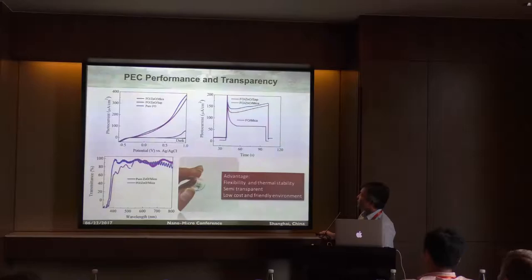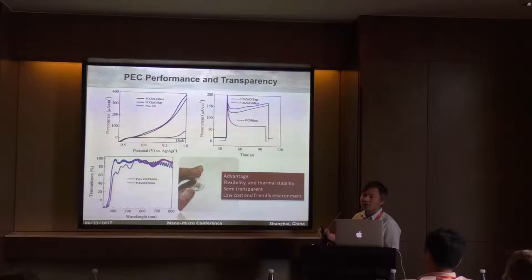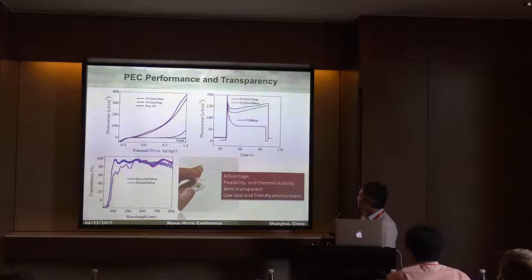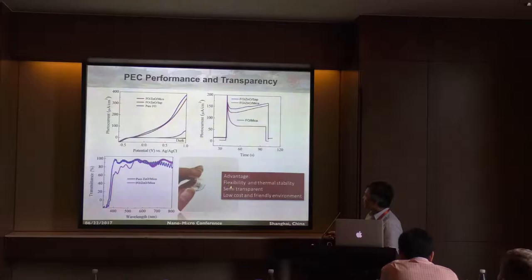The single crystalline substrate and the muscovite sample show very similar PEC performance. If you check the optical transmittance for iron oxide with zinc oxide, we can get transmittance up to 60% — so it is not fully transparent, it is more close to semi-transparent, but you can still see something through it. For this kind of photoelectrode, it is mechanically flexible.